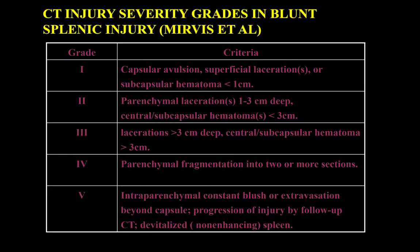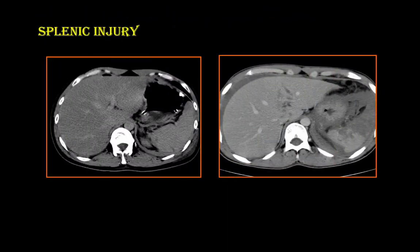For splenic injury grading, it is similar to the liver. Less than 1 cm is Grade 1; 1 to 3 cm is Grade 2; laceration more than 3 cm with subcapsular hematoma more than 3 cm is Grade 3; parenchymal fragmentation into two or more sections is Grade 4; and intraparenchymal contrast blush or extravasation beyond the capsule is Grade 5. The first image shows a small linear hypodensity as Grade 1, and the second image shows a hypodensity more than 3 cm as Grade 3.